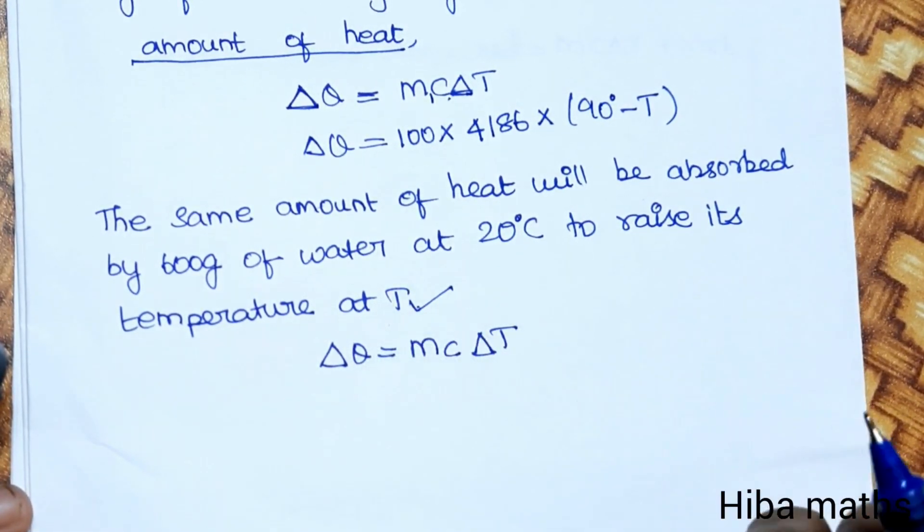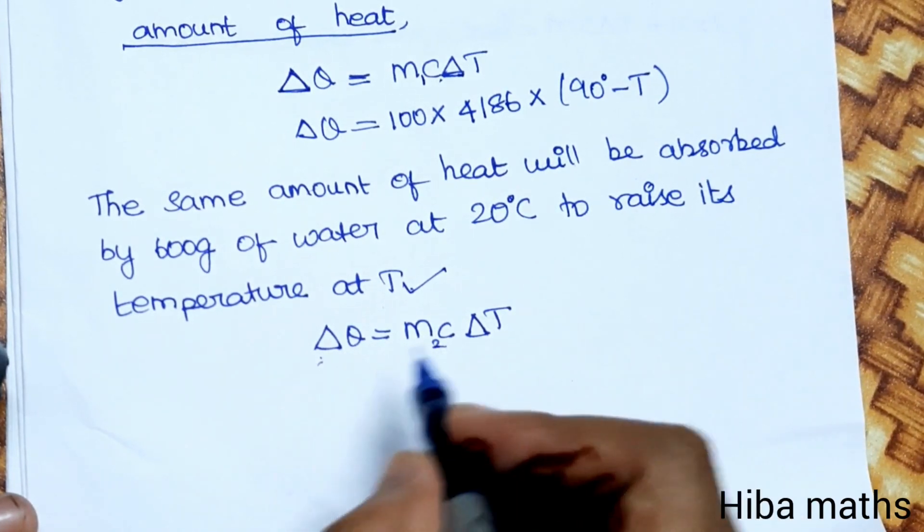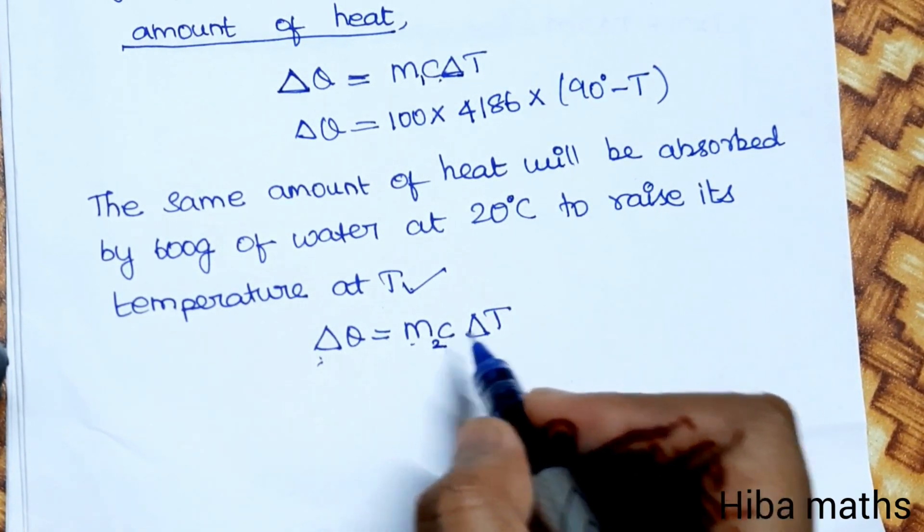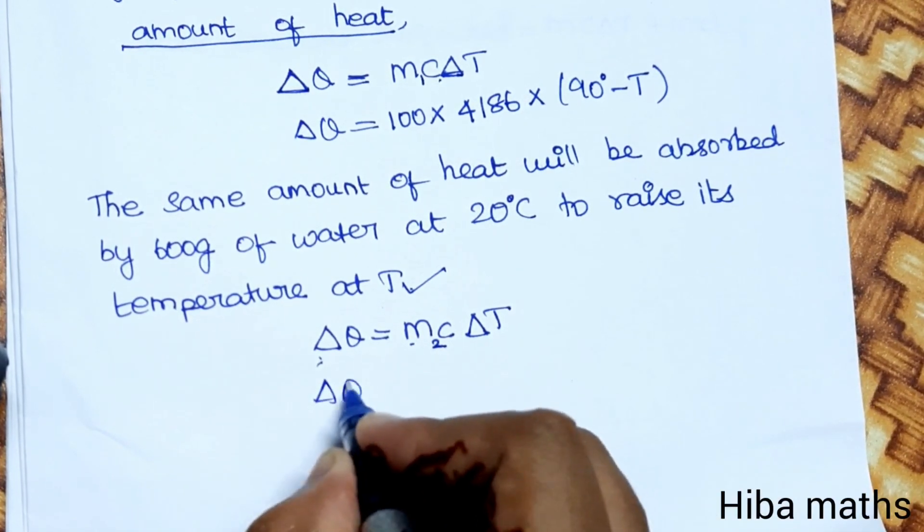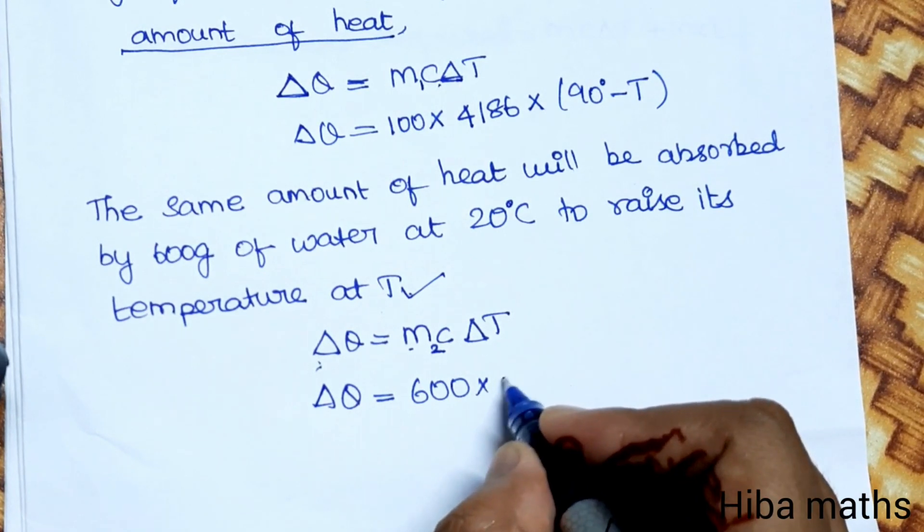The change in heat equals m2, which is mass times specific heat capacity times change in temperature. So ΔQ equals mass 600 times c value 4186 times ΔT.